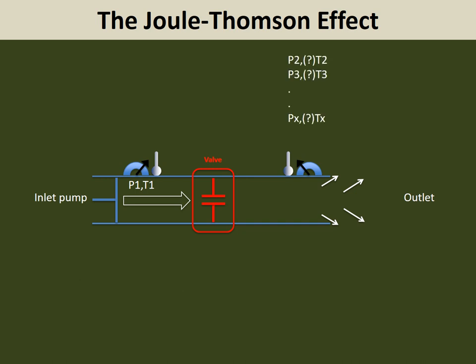Here, we set up a constant high pressure P1 and a constant temperature T1 on the left. Then, using the valve, we will set up a constant value for P2 and measure the temperature T2. While keeping P1 and T1 the same on the left, we set the valve to obtain a lower pressure value P3 and measure temperature T3. The process is repeated by continuing to dial the valve to obtain lower pressure Px and measure temperature Tx. The results provide a set of points that can be plotted as shown in the next diagram.